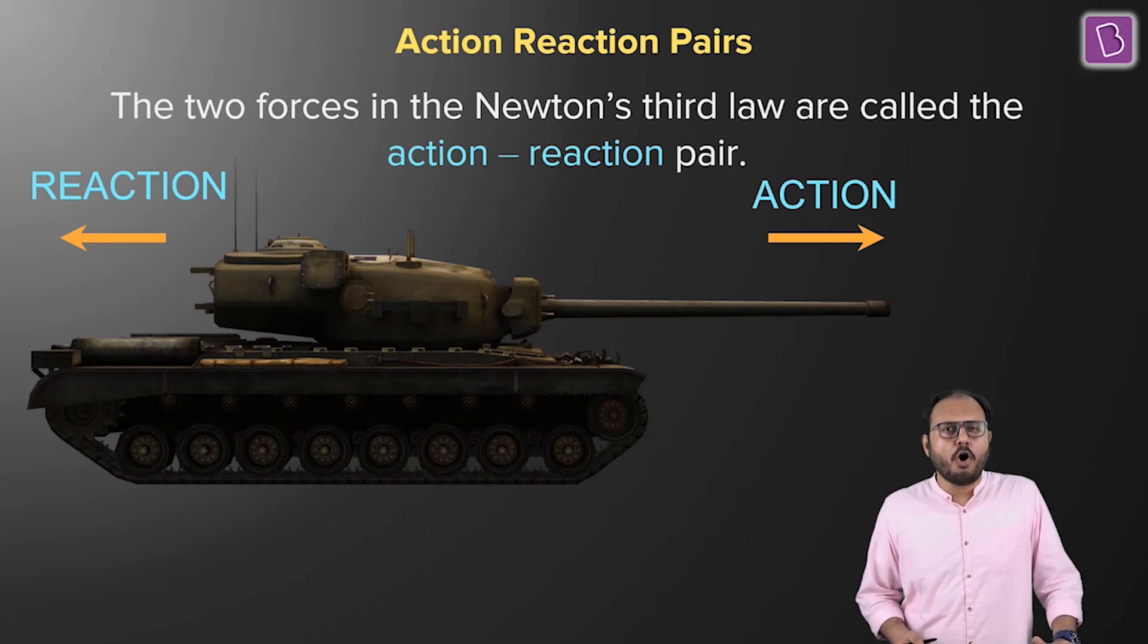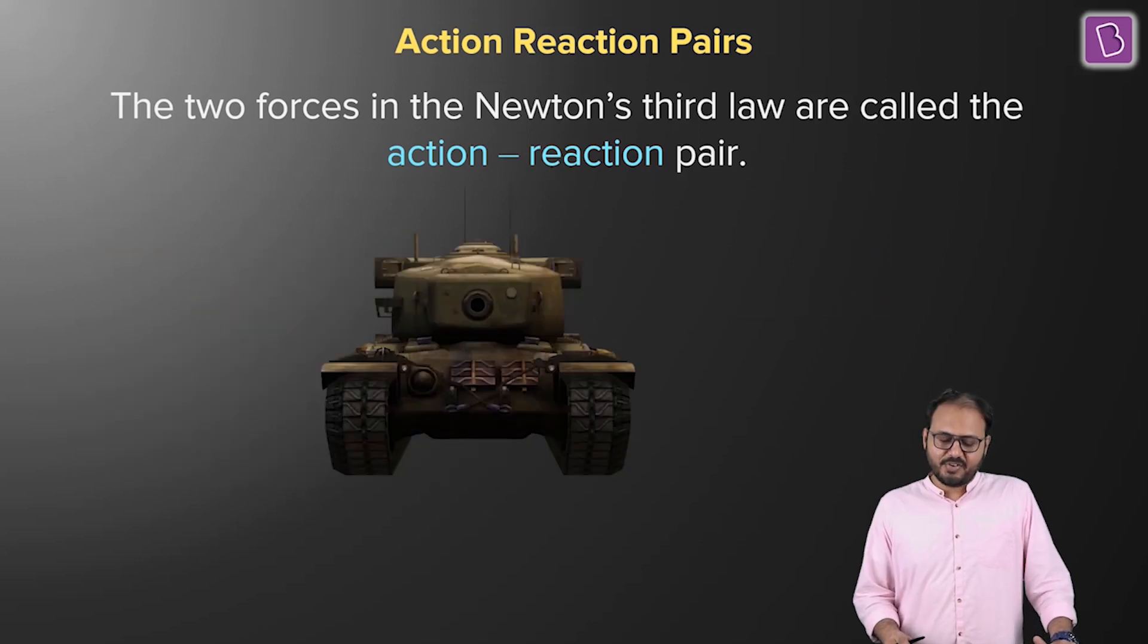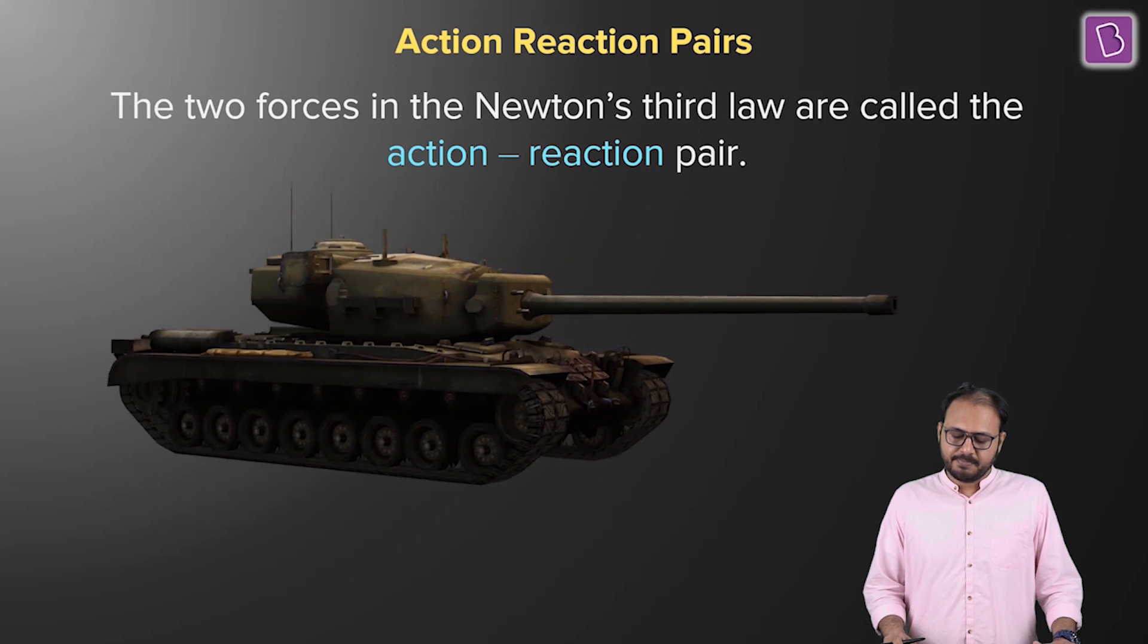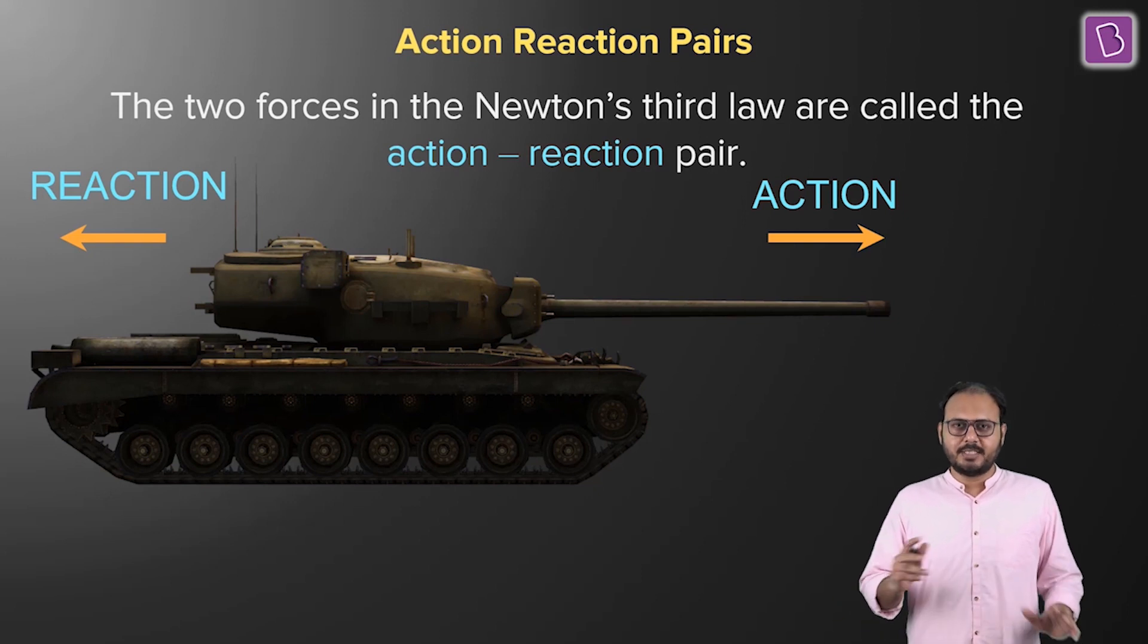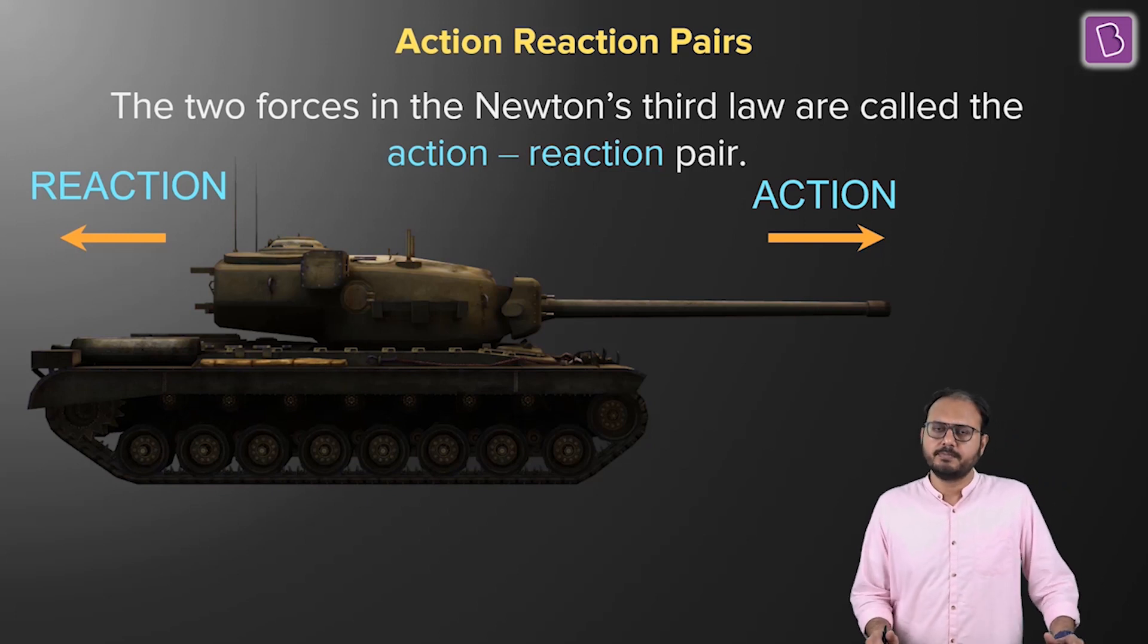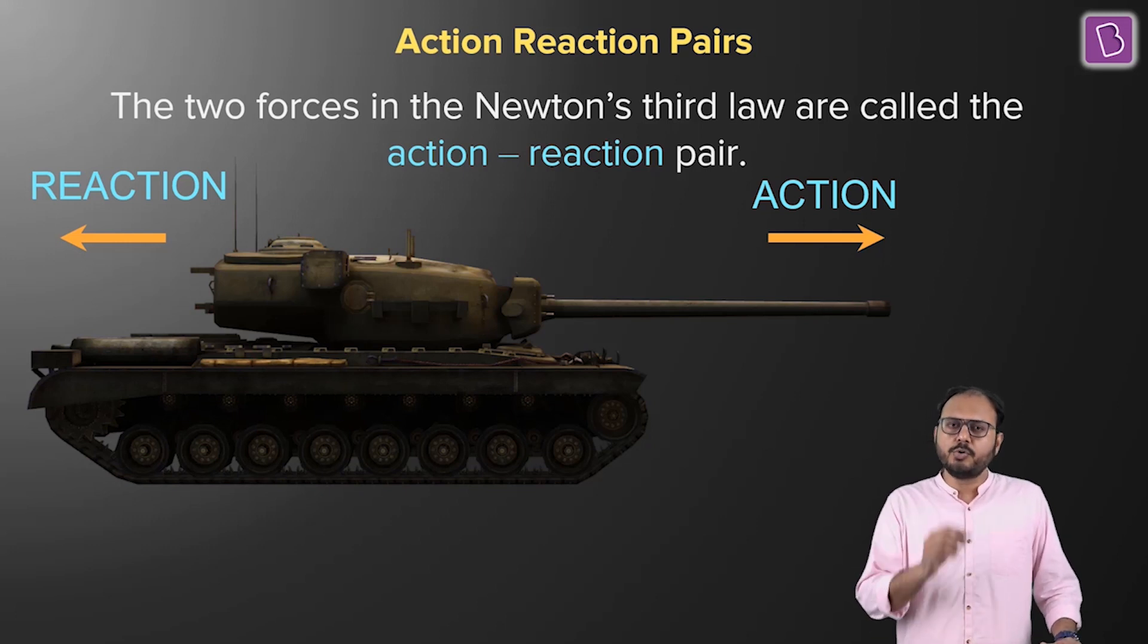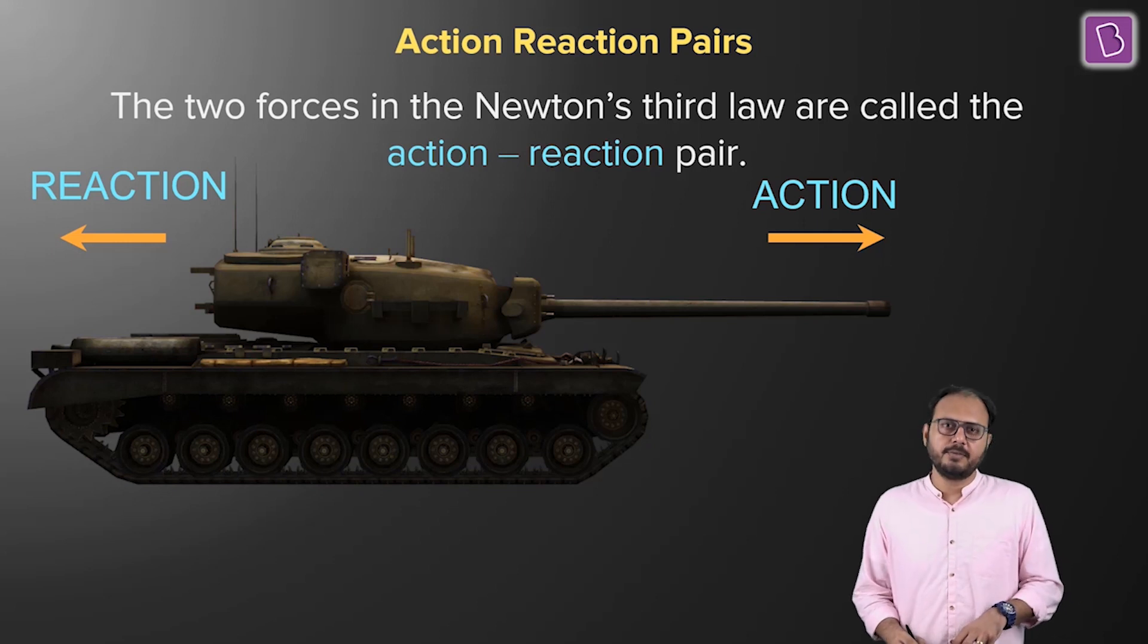There is a reason why I did not give you this definition before. Because this definition is not wrong, but it is misleading. I will tell you why it is misleading. Let's look at this beautiful tank again. Action-reaction pair. The two forces in Newton's third law are called the action-reaction pair. The tank takes aim. Boom. The boom is action. The cannon going forward and the tank getting jittery, the recoil of the tank, is the reaction. And my claim is that it is not completely correct. There is something missing. Shall we understand more examples first and then see what is the missing part?